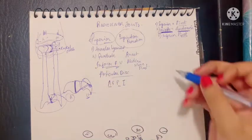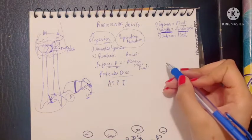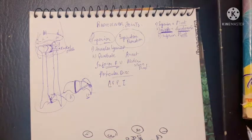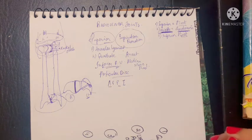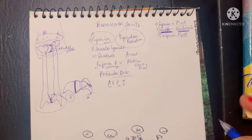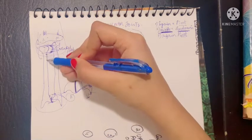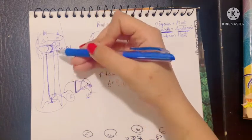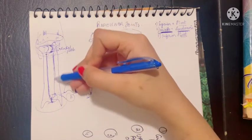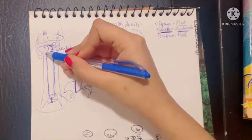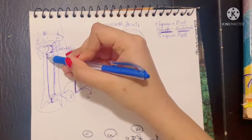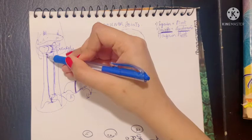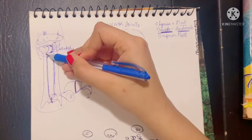The interosseous membrane connects the shafts of the radius and ulna, attached to the interosseous borders of both bones. The interosseous border of the radius is its medial border, while the interosseous border of the ulna is its lateral border. The interosseous membrane starts two centimeters below the radial tuberosity.